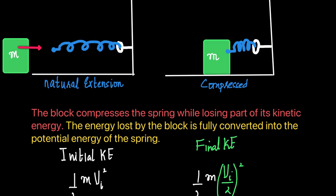Here the spring is at its natural extension, and here the spring is compressed. The block compresses the spring while losing part of its kinetic energy. The energy lost by the block is fully converted into the elastic potential energy of the spring.